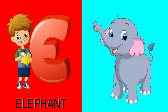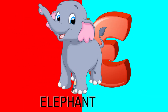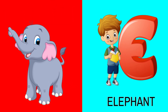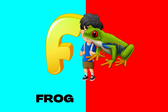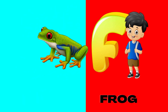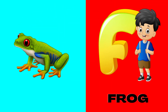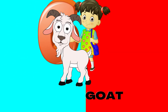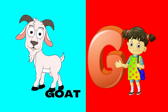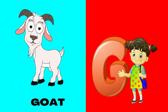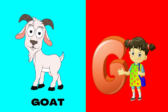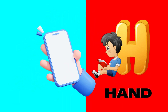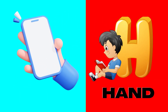E is for elephant, e-e-elephant. F is for frog, f-f-frog. G is for goat, g-g-goat. H is for hand, h-h-hand.